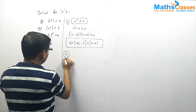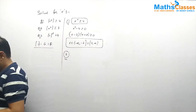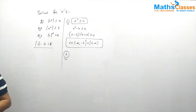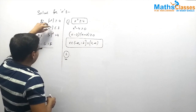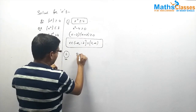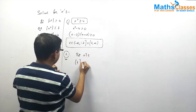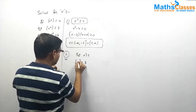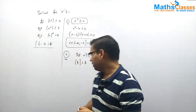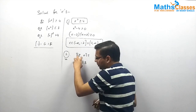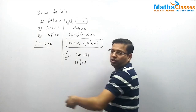Moving on to question number 2: ⌊x²⌋ ≤ 3. Put x² = t, so let us say ⌊t⌋ ≤ 3. Think of it in terms of input and output — the input t goes into the greatest integer function and the output should be 3 or less than 3.